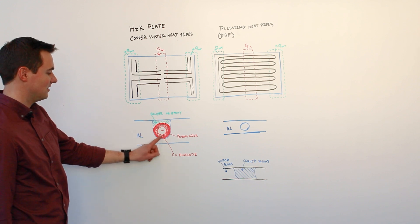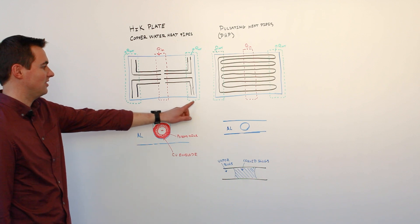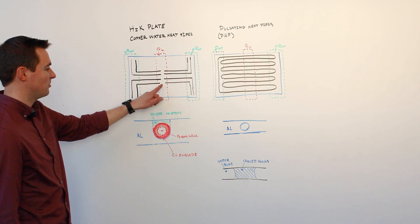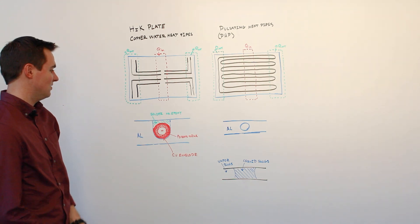The wick structure allows the condensed liquid in the cold regions to return to the evaporator to complete the two-phase loop.